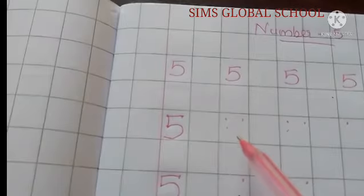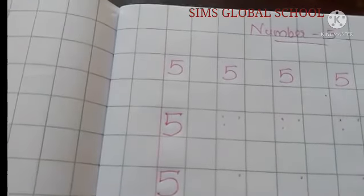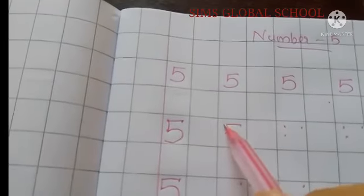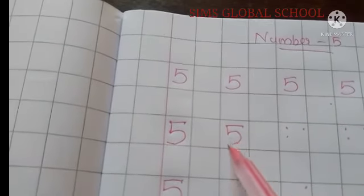Otherwise you can just give them one single dot like this. Okay, so again, sleeping line, standing line, semicircle.